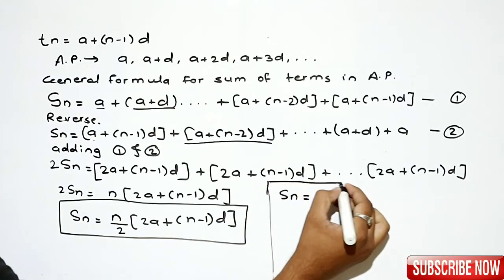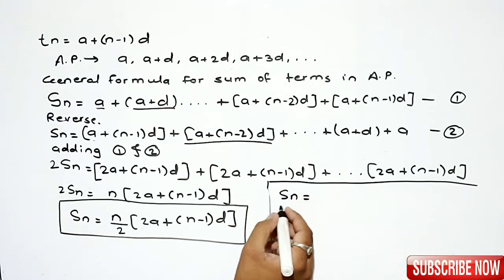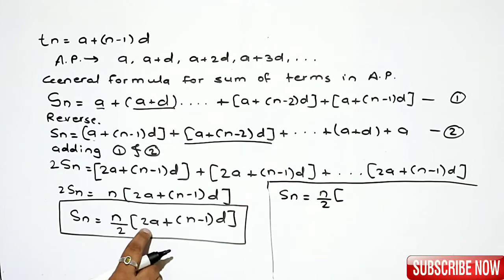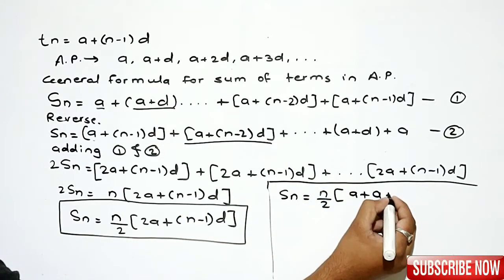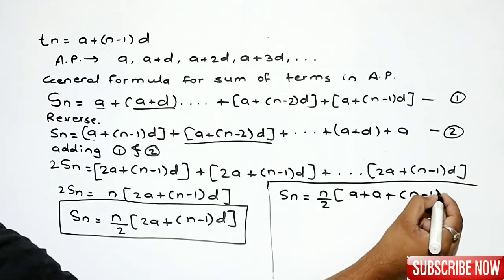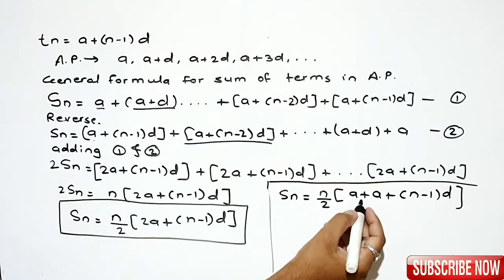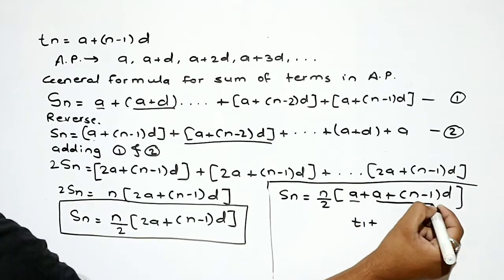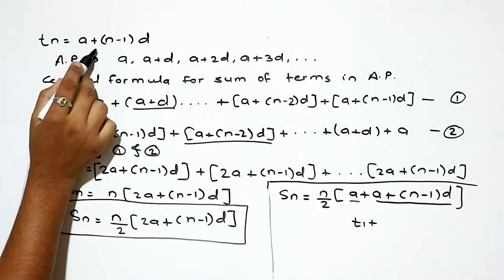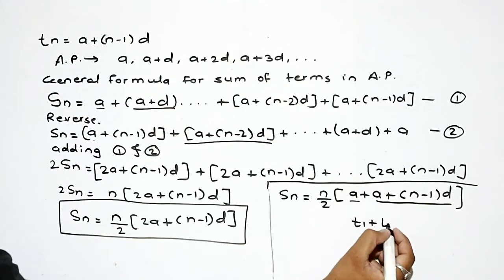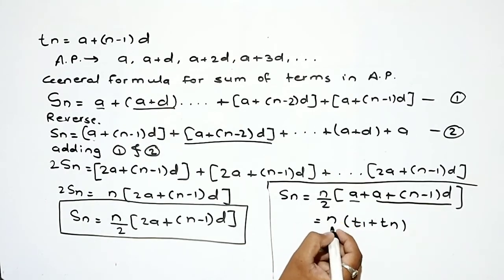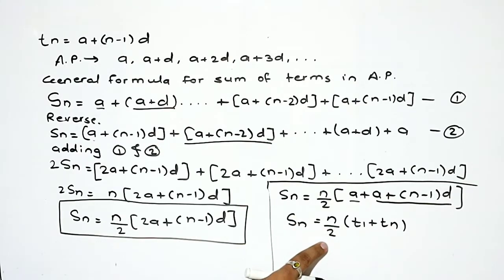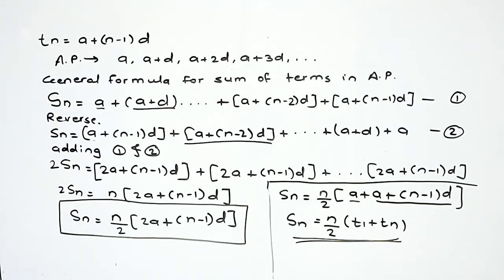We can also simplify this formula: Sn = n/2 × [2a + (n-1)d]. Since 2a = a + a = t1 + tn (because tn = a+(n-1)d), we can also write Sn = n/2 × (t1 + tn). Note down both these formulas.